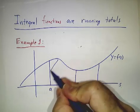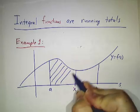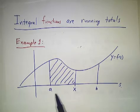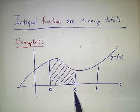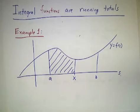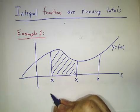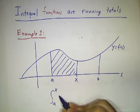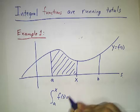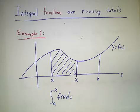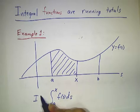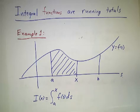So if we want this area, how much area do you have up to x? That's going to be the integral from a to x of f of s ds. And we'll give this a name, we'll call it i of x. So i of x gives you the area up to x.